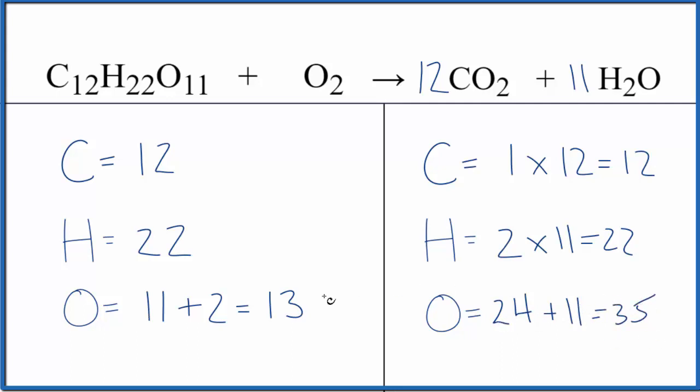Okay, so this seems to be a little bit of a problem. So here's the way to think about it. 11 plus some number, that's going to equal 35. So 11 plus 24, that's 35. So if we put a 12 in front of the O2, 2 times 12, that's 24. So we have 11 plus 2 times 12, the 24, that gives us 35, and we're done.